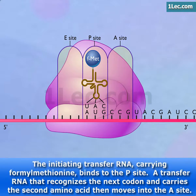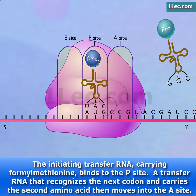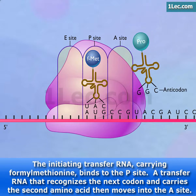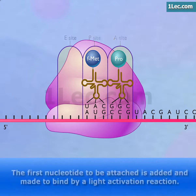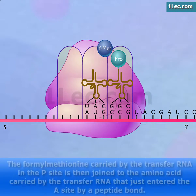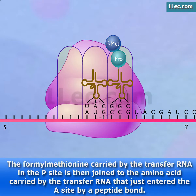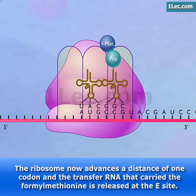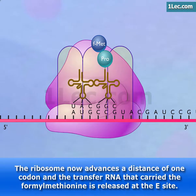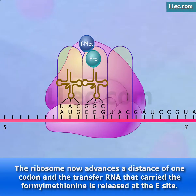The initiating transfer RNA carrying formyl methionine binds to the P-site. A transfer RNA that recognizes the next codon and carries the second amino acid then moves into the A-site. The formyl methionine carried by the transfer RNA in the P-site is then joined to the amino acid carried by the transfer RNA that just entered the A-site by a peptide bond. The ribosome now advances a distance of one codon and the transfer RNA that carried the formyl methionine is released at the E-site.